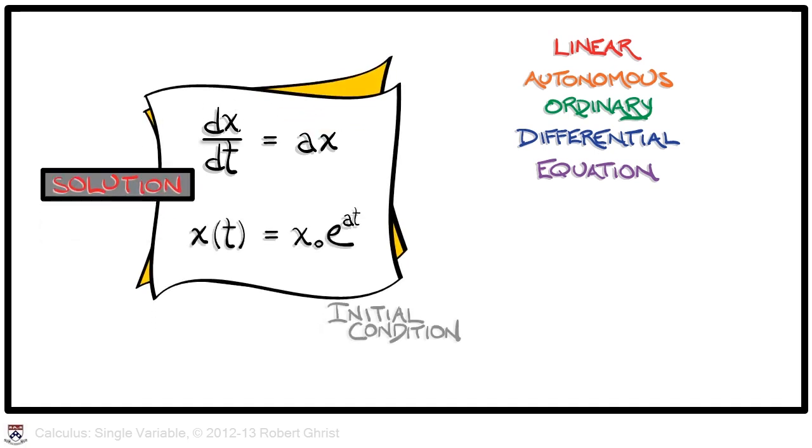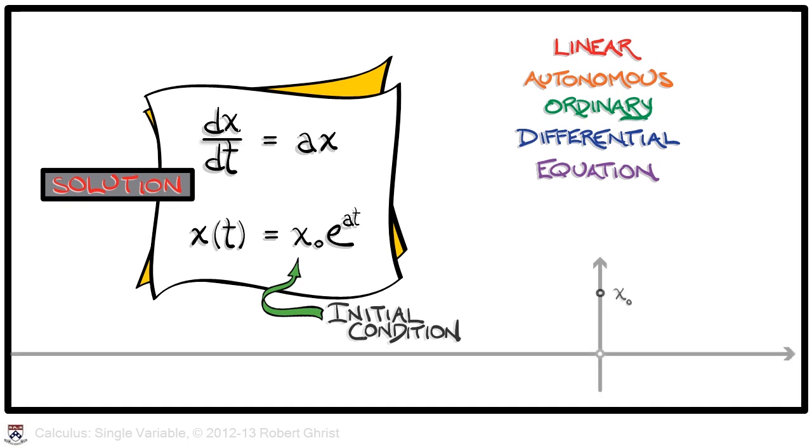It is extremely important that you know this and its solution: x equals the initial condition x naught times e to the at. What does this solution mean? What does it look like? Well, at time t equals zero, it passes through x naught, the initial condition.